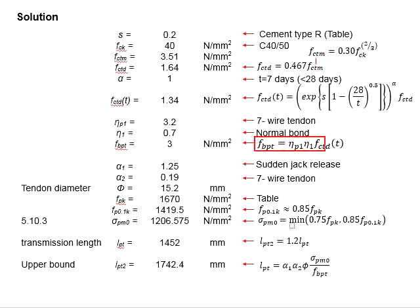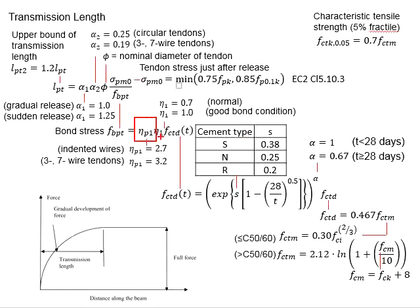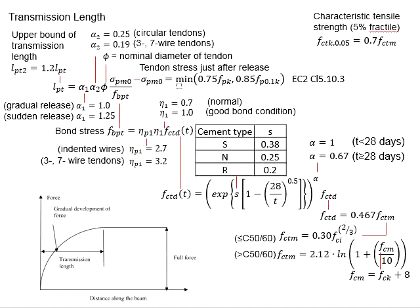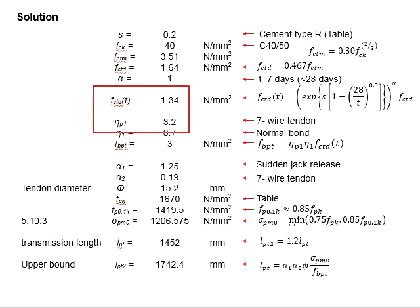The next step is to define the bond stress in the tendon. This will involve eta P1, eta 1, and also FCTD(T), which we have calculated earlier. Seven-wire tendon is being used, therefore eta P1 will be equal to 3.2. Under normal bond conditions, eta 1 will be equal to 0.7. Substituting the relevant values into the equation, you get bond stress equals 3 Newton per mm squared.